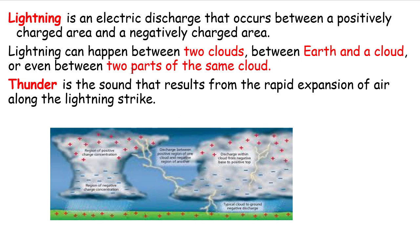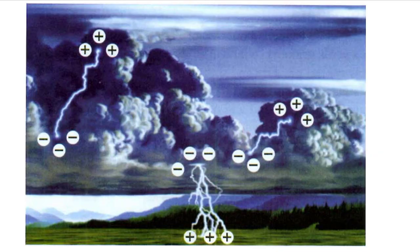Lightning can even happen between two parts of the same cloud. There are three kinds of lightning. The first kind is when electrons move from one side of a cloud to another side, as you can see here.